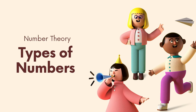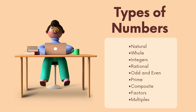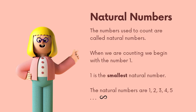Welcome to Math with Miss B, number theory: types of numbers. You have natural, whole, integers, rational, odd and even, prime, composite, factors, and multiples. Natural numbers are the numbers used to count. We begin with the number one — one is the smallest natural number. The natural numbers are one, two, three, four, five, right on up to infinity.